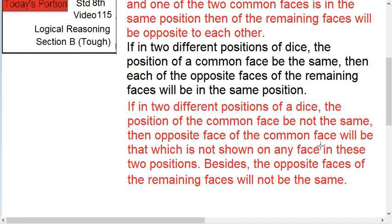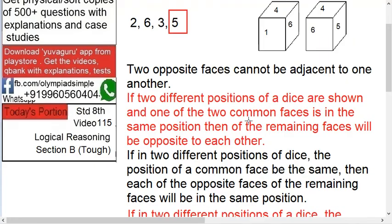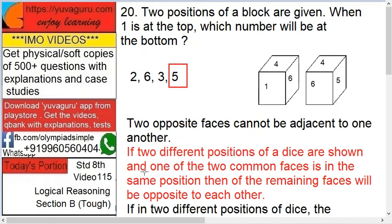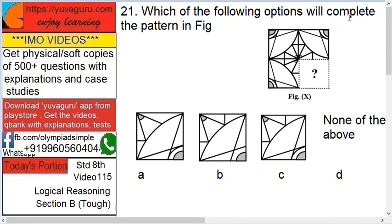I'll explain it in separate videos, these all four rules again. If in two different positions of a dice, the position of the common face be not the same, then the opposite face of the common face will be that which is not shown on any face in these two positions. This is rule number four. Besides, the opposite faces of the remaining faces will not be the same.